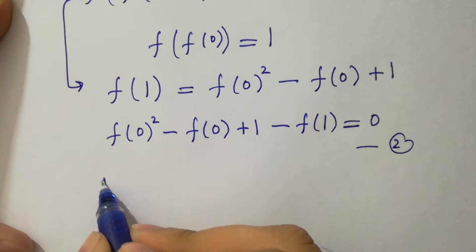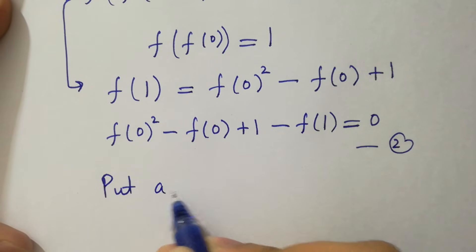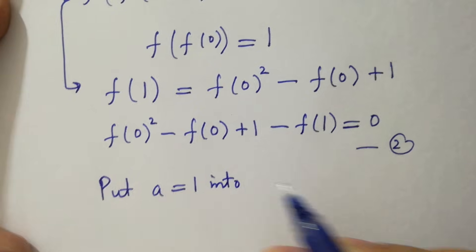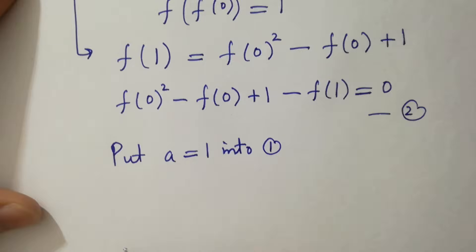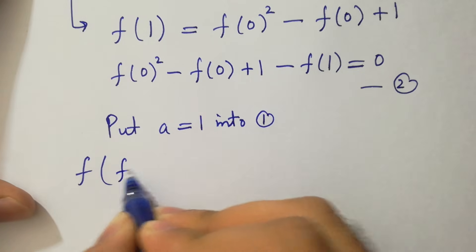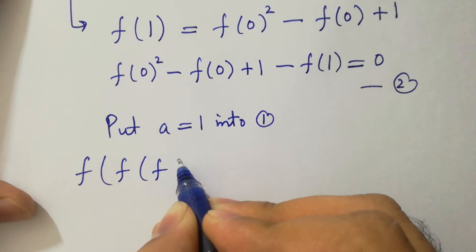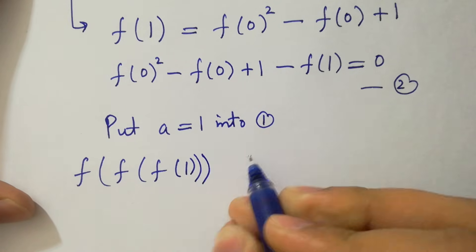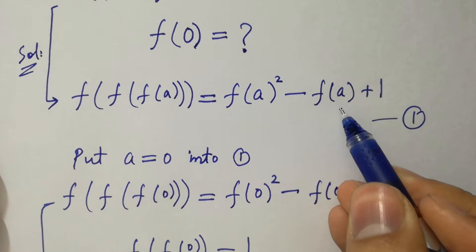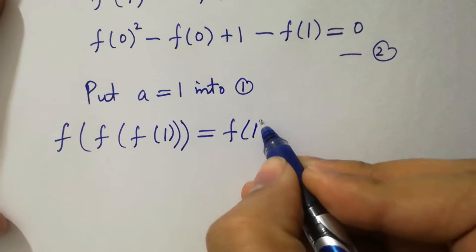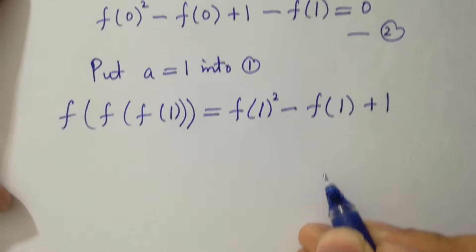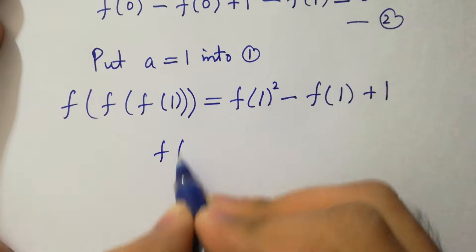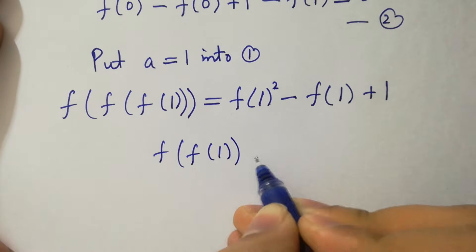Now put a equal to 1 into the first equation. We have f of f of f of 1 equal to f of 1 squared minus f of 1 plus 1. And f of f of f of 1 equal to 1.